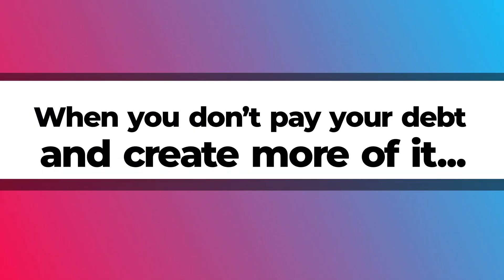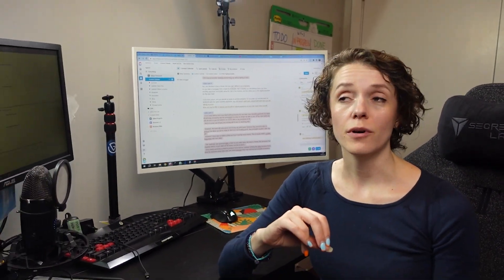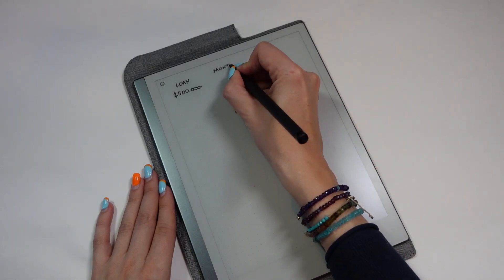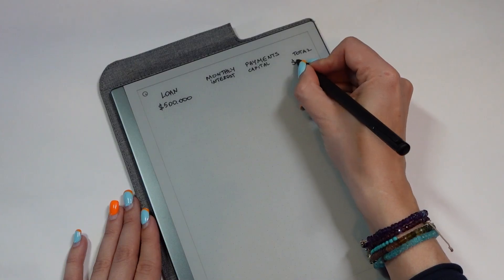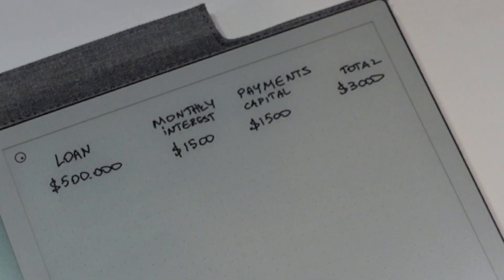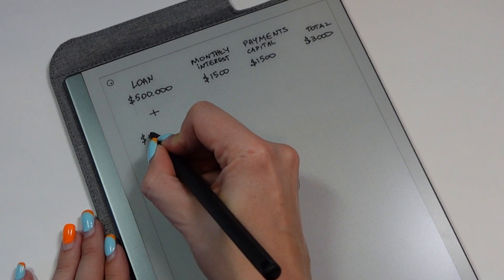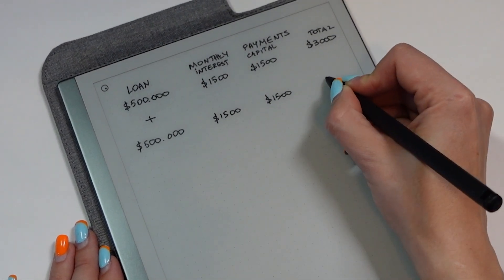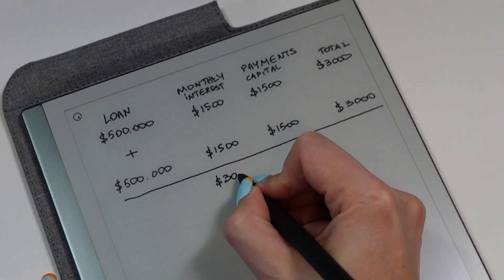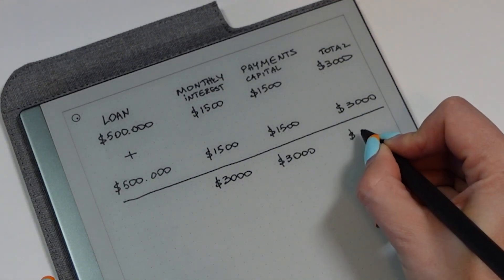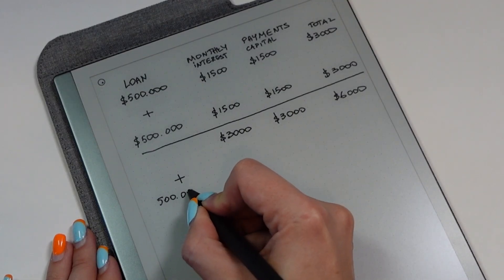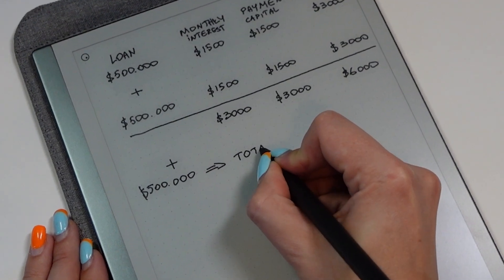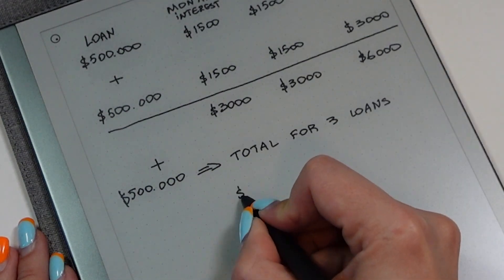What happens if you don't pay your debt and create more of it? Let's look at a real-life example: taking a loan. Say you take a mortgage for $500,000, and monthly payments are $3,000 — $1,500 is interest, the other part is capital repayment. Then you take out another $500,000 loan with the same monthly payments. You still haven't paid your original debt and now you're taking on more. If you keep taking new loans without paying the old ones, your monthly payments keep increasing and at some point you may no longer be able to pay off the debt itself — only the interest, or nothing at all.